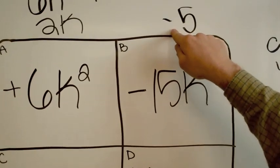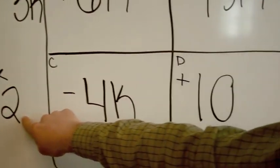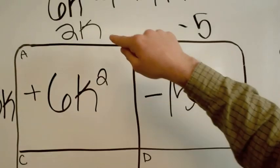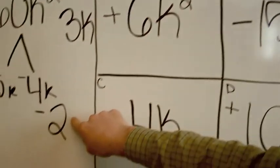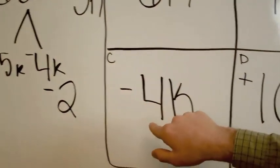We need a negative 5 here times a negative 2, because they cancel out to be positive 10. And you need a 2K here and a negative 2K, and a negative 2 here because that equals negative 4K. That's how you know when you need negatives.